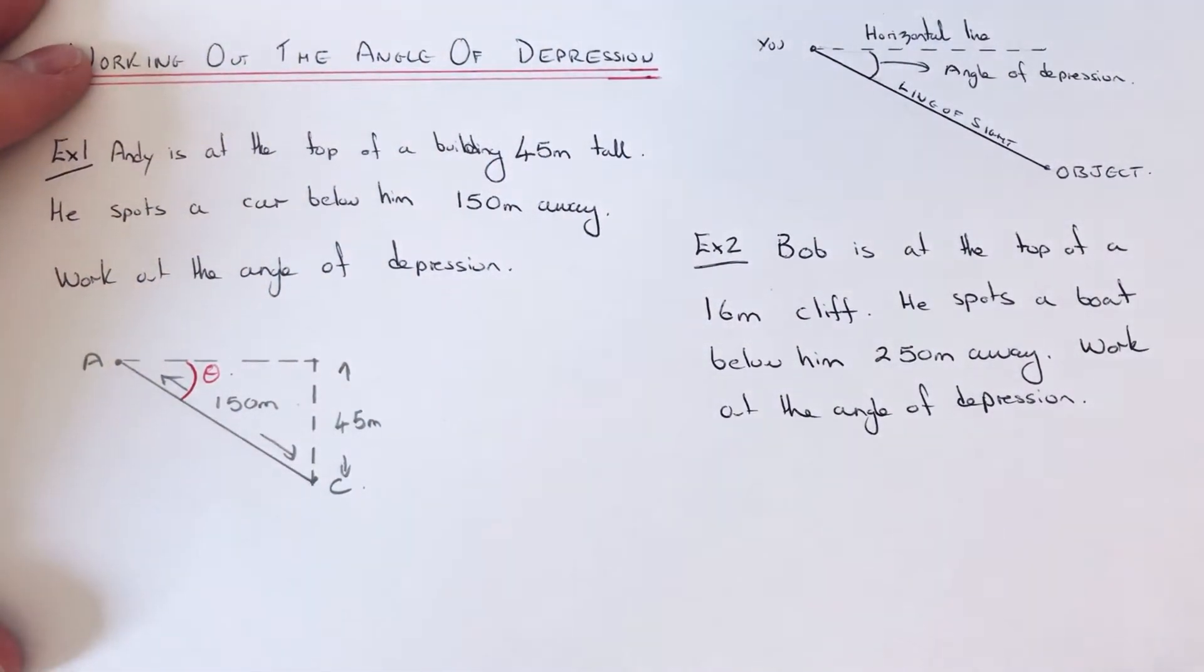So to solve this problem, you're actually going to use trigonometry, because we've got two sides of a right-angled triangle and we need to find the angle.